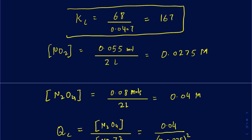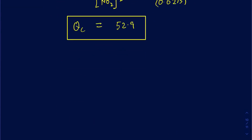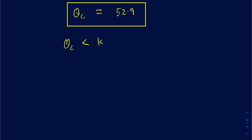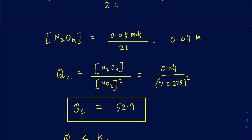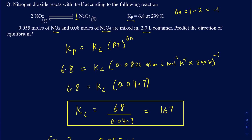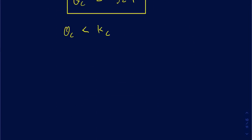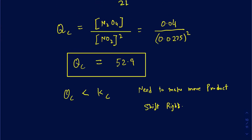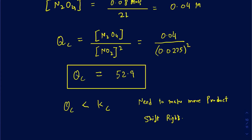Now I know my Qc. I can compare both of those. Your Kc came out to be 167, and since your Qc of 52.9 is less than the Kc, that means the reaction does not have enough product as it's supposed to have once it gets to equilibrium. So to make more products, some of these NO2 molecules must react with one another to make N2O4. Since your Qc is less than the Kc, you need to make more product, and so the reaction is going to shift to the right side.